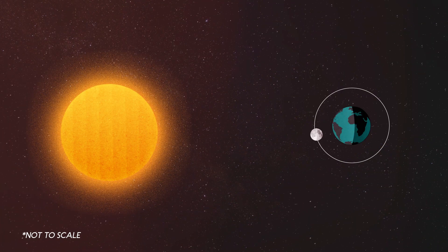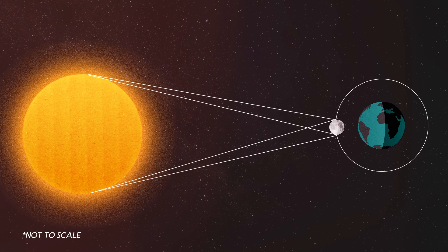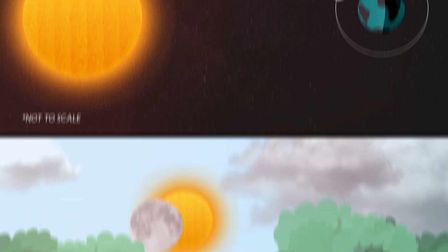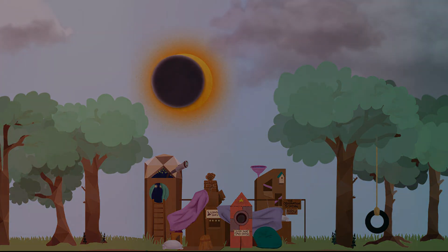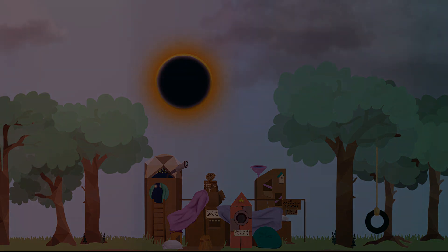A solar eclipse happens when the moon gets right smack dab between the sun and the Earth. When the moon does this, it blocks out some of the sun's light and casts a gigantic shadow on the Earth. It doesn't last for very long, just a few minutes really. But when the moon blocks the light from the sun, it can make the sky appear as dark as night, even though it's still daytime.